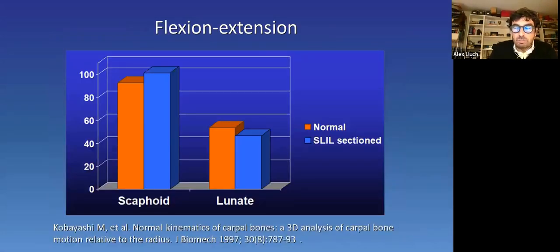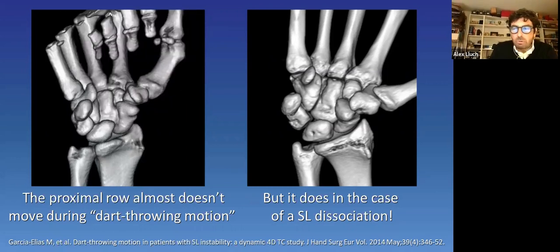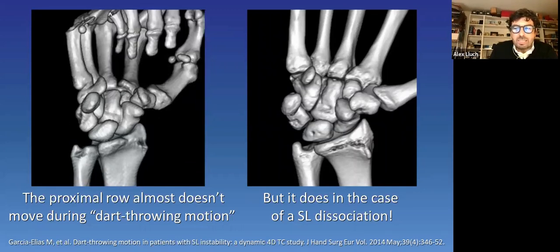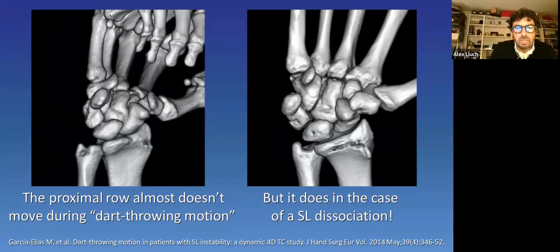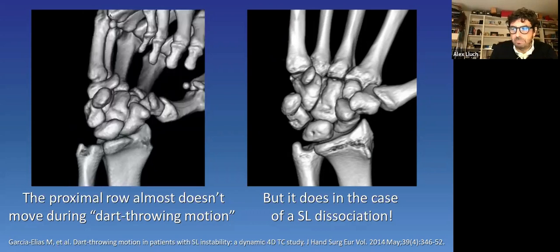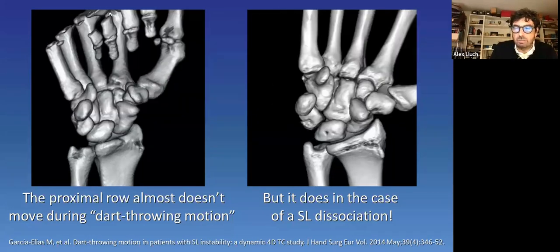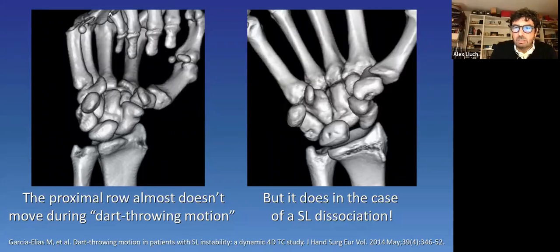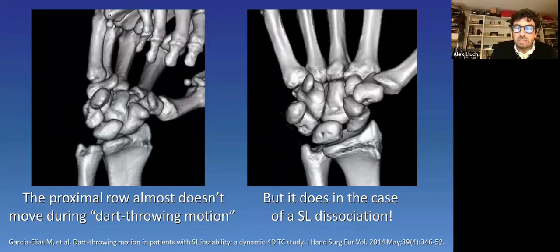The scaphoid would not only move different, but it will move more, as it was demonstrated more than 20 years ago. Another interesting fact is that the proximal row almost doesn't move during the dart throwing motion in normal conditions. Or at least, it almost does not move around the neutral position. But the scaphoid has a lot of motion during dart throwing in the case of a scapholunate dissociation. You can see it on the right side. This is a dart throwing motion. You see how the scaphoid moves from the beginning up to the end. This fact has clinical implications, especially in the postoperative protocols.